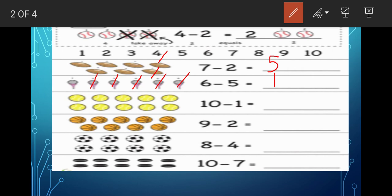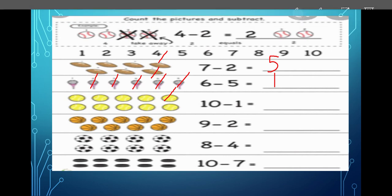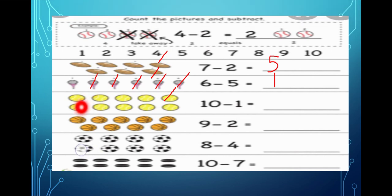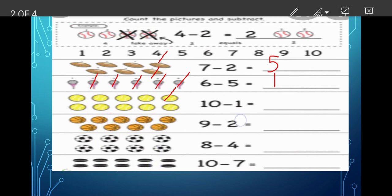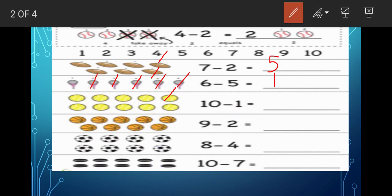Then this is a circle. How many circles are there? Ten circles. Out of that if we cross one circle, how many are there? Children, count — you have to count it. Yes, how many did you get? There are nine. So we will write the answer as nine. That means ten minus one is equal to nine.